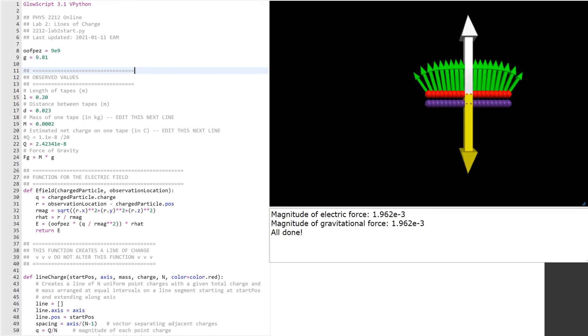In this model I basically did 20 point charges that were in the line, knowing that the charge is equally distributed along the tape.